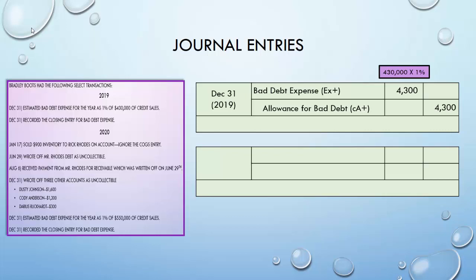So we have bad debt expense for 1% of $430,000, which is $4,300. Because we're not actually writing anything off yet, instead of taking receivables off the books we're going to put it into a contra asset account called Allowance for Bad Debt, which gets credited for $4,300. Allowance for Bad Debt essentially shows people using your financials what portion of your receivables you don't think you're actually going to collect, because no company collects all their receivables.